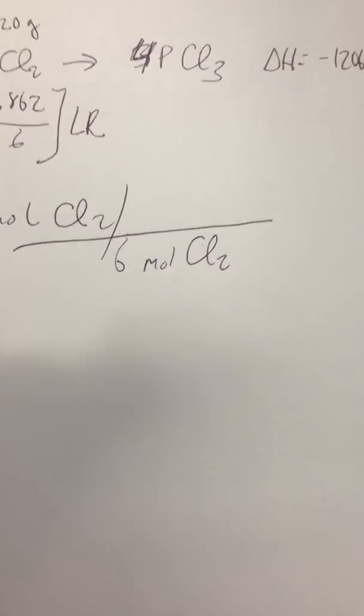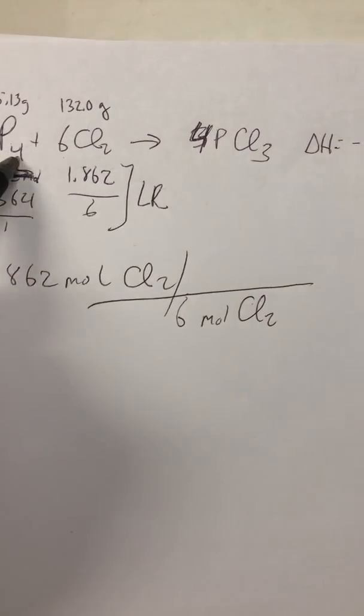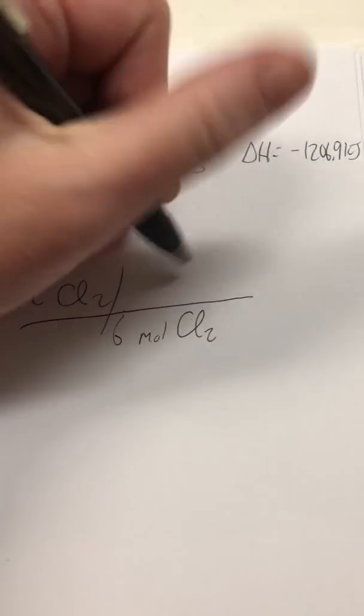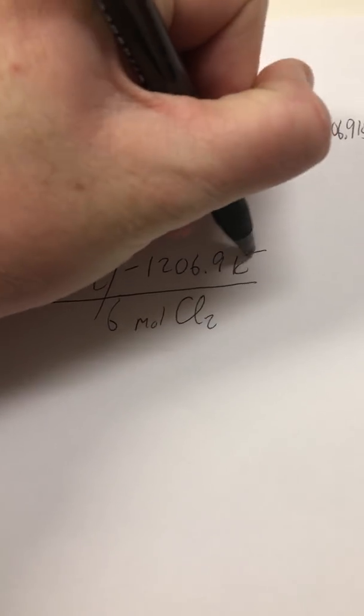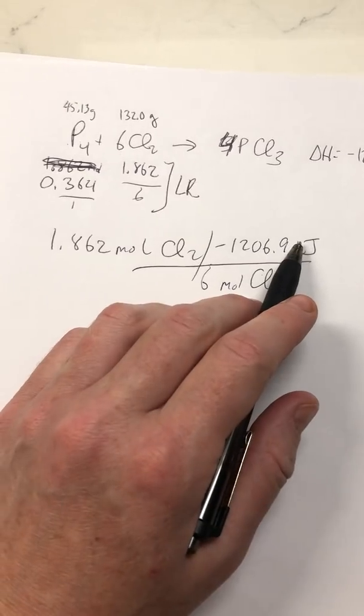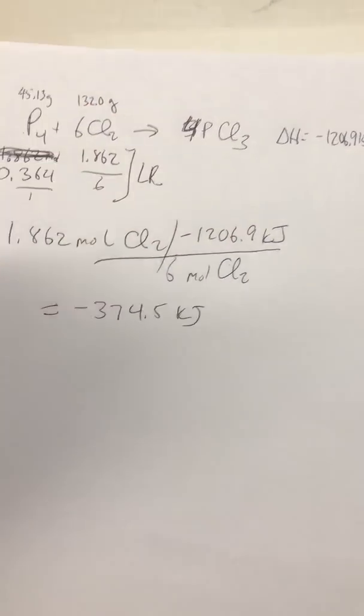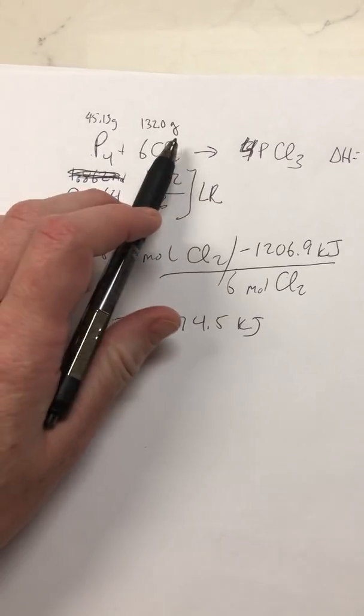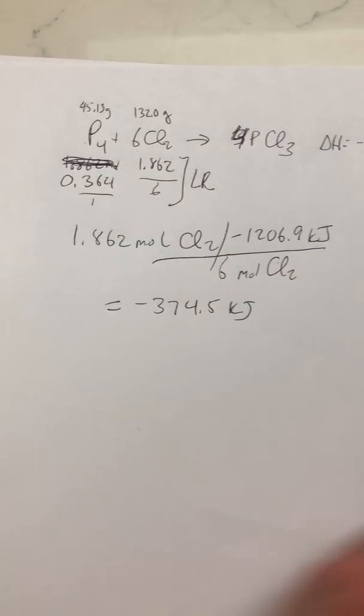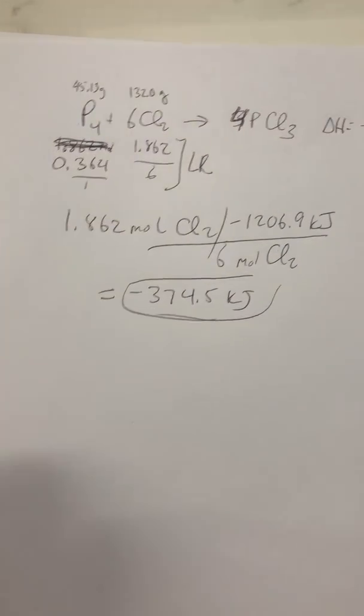Now determine the limiting reactant: divide 0.364 by 1 and 1.862 by 6 — the smaller value identifies the limiting reactant, which is Cl2. Using 1.862 moles of Cl2 in stoichiometry, for every 6 moles of Cl2 we get negative 1206.9 kilojoules. Calculating that out gives an answer of negative 374.5 kilojoules, meaning that much heat is released when those amounts of P4 and Cl2 react.